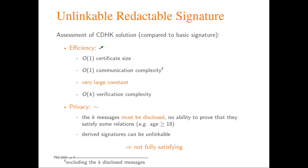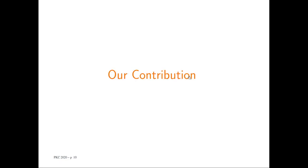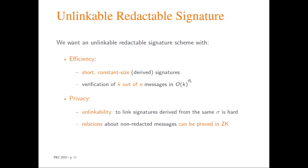So in our paper, we want to improve these previous results by providing an unlinkable redactable signature scheme with short, constant-size signatures, for which it is possible to verify the authenticity of k out of n messages with complexity that only depends linearly on k. Moreover, we want a system that achieves unlinkability, meaning that it is not possible to link signatures derived from the same signature, and we want to be able to prove relations about non-redacted messages using zero-knowledge proofs.